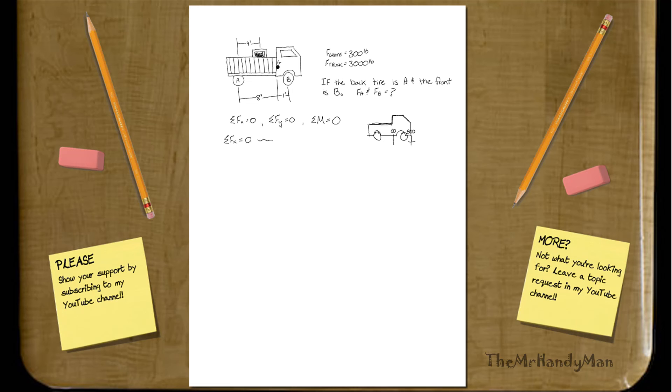Hi there, this is just another example of an equilibrium problem. So what we have here is a truck that's 3,000 pounds itself with an additional 300 pound crate in its flatbed.